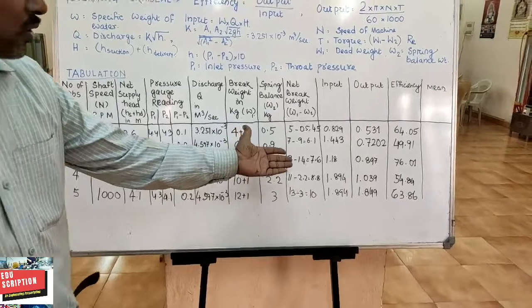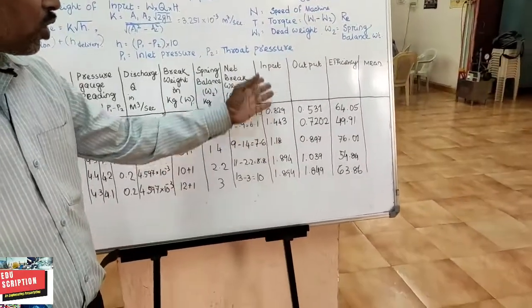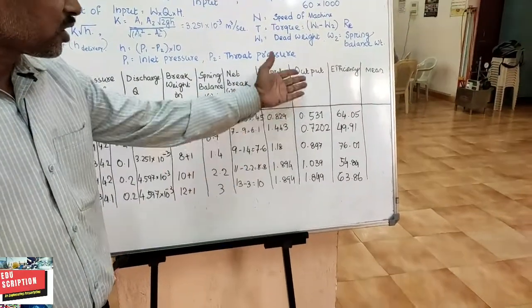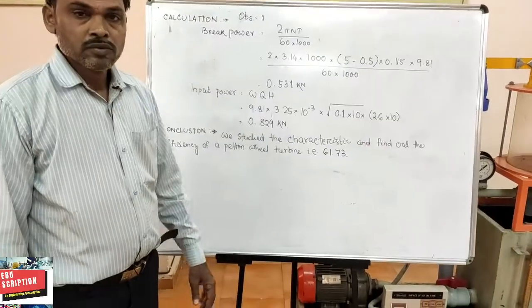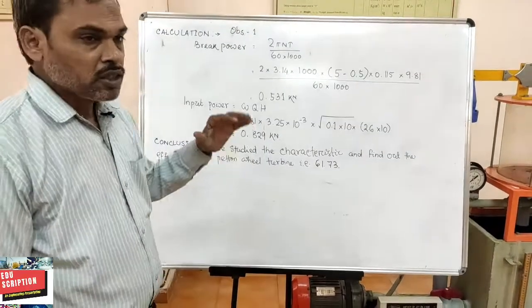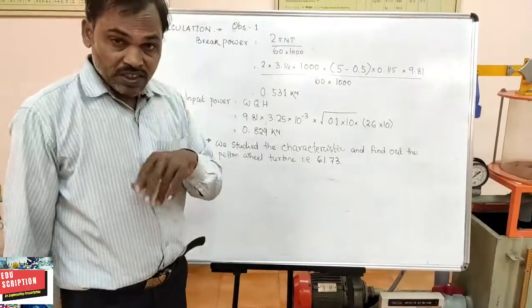Next we move for the calculation part. For finding out the efficiency, the basic formula is your brake power by input power.